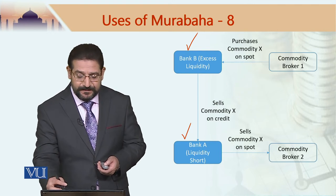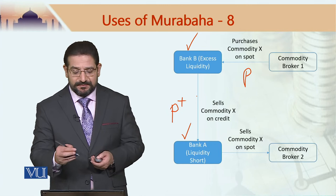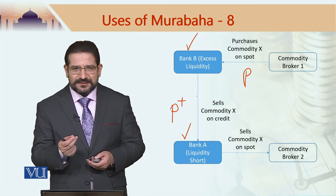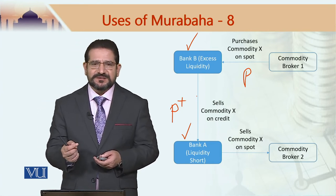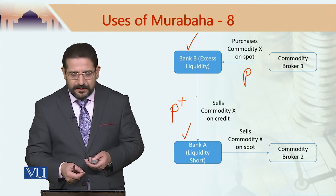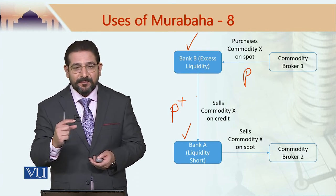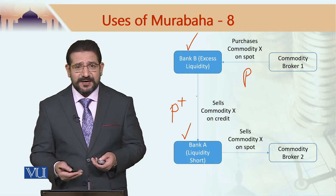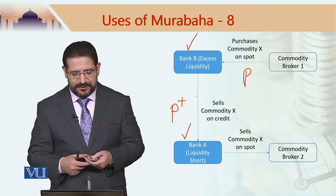Normally this is about a 30-day transaction. Bank A would then immediately sell that commodity to broker 2 for its spot price and generate the required liquidity. Bank A would then pay the price which would be the purchase price from commodity broker 1 — say if that is P, the price Bank A pays to Bank B would be P+. Normally in liquidity management transactions, this P+ is a few basis points — a very small amount of profit margin — because they are normally short term. Some commodity murabaha transactions could be for only one week, depending on how long a bank needs liquidity.